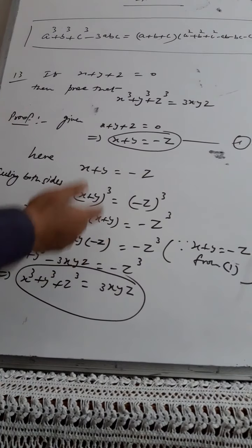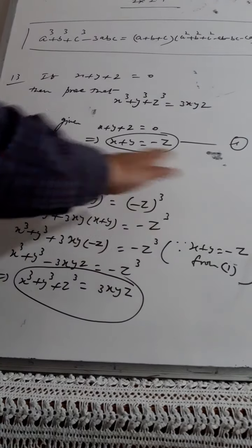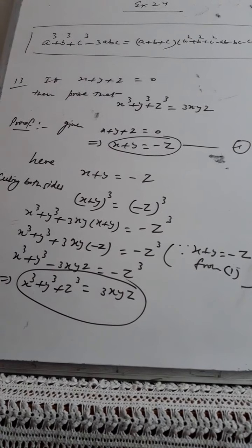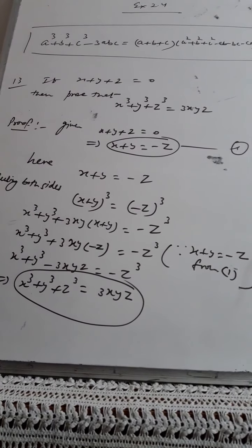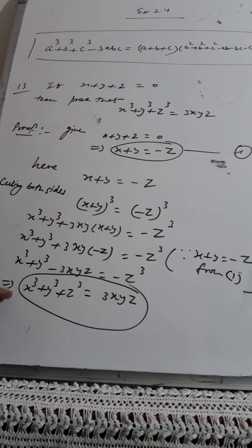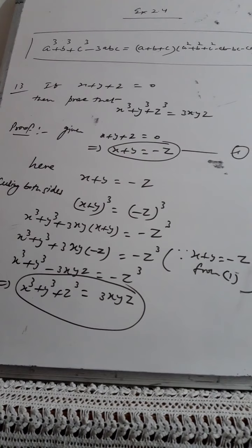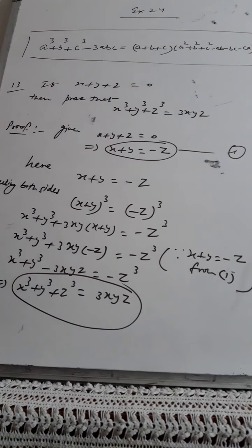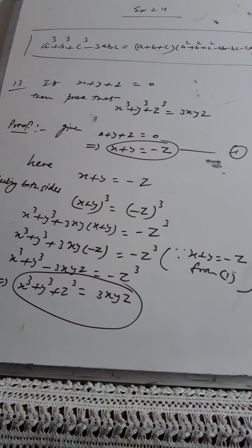As I mentioned, you can also take y + z = -x or x + z = -y — the steps remain the same for every variable and you will reach the same result. I think that is sufficient for today. There are three more questions — 14, 15, and 16 — that I will come back to tomorrow. Thank you.